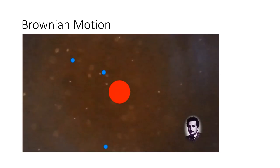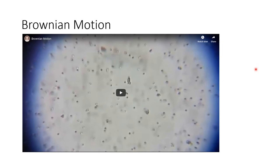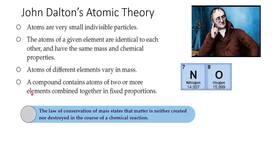In 1905, Albert Einstein proved that the movement was caused by tiny, invisible, fast-moving particles hitting the pollen grains. This is Brownian motion, and it is another observation that supports the idea of the particulate nature of everything around us.